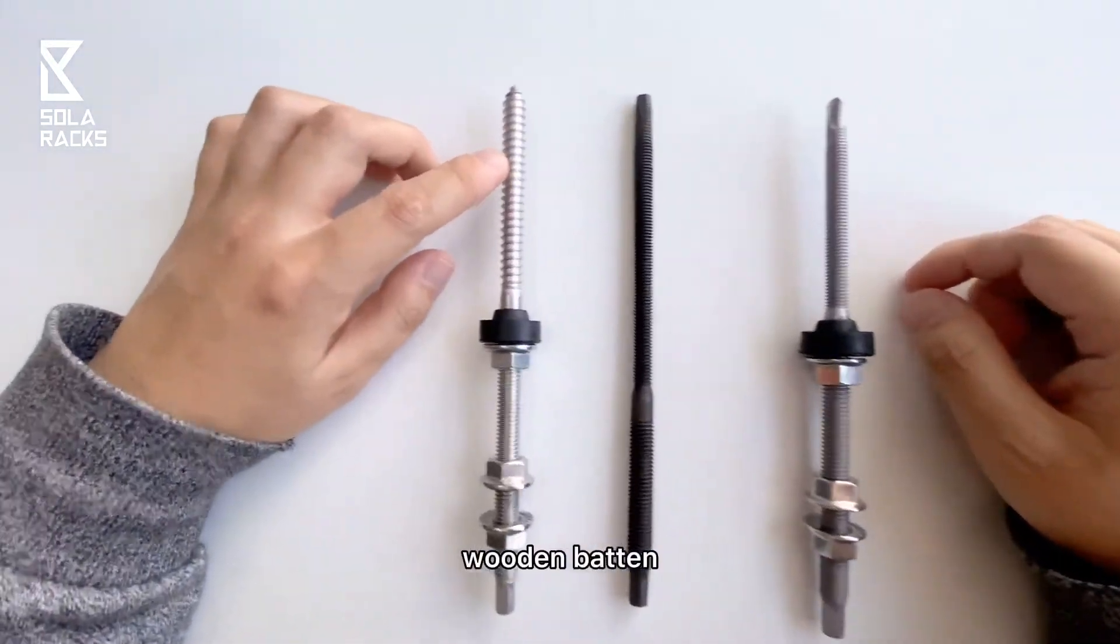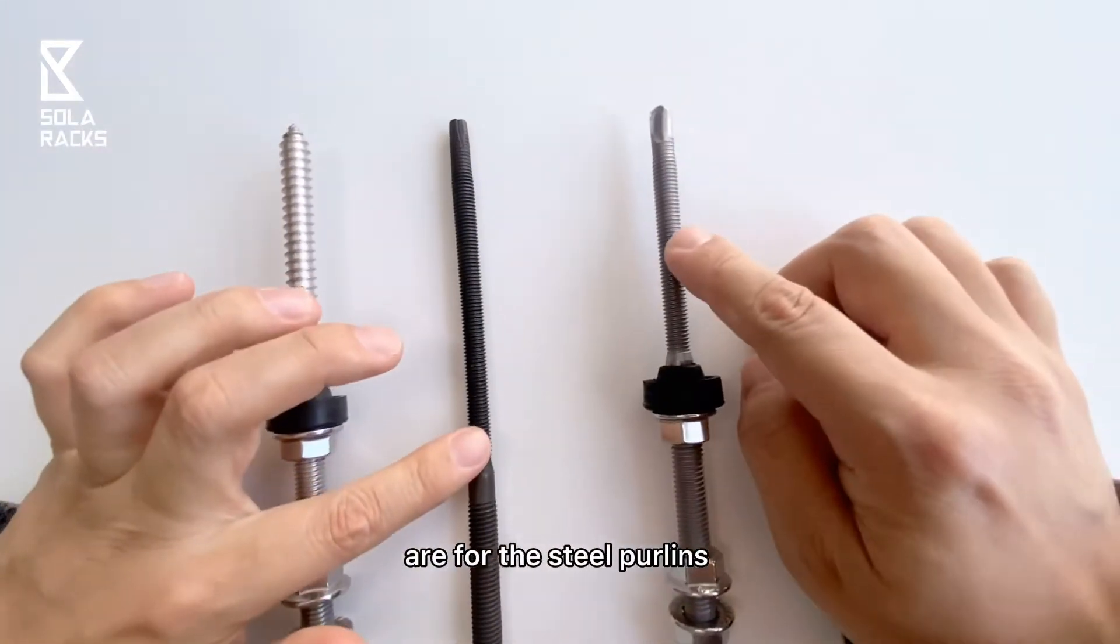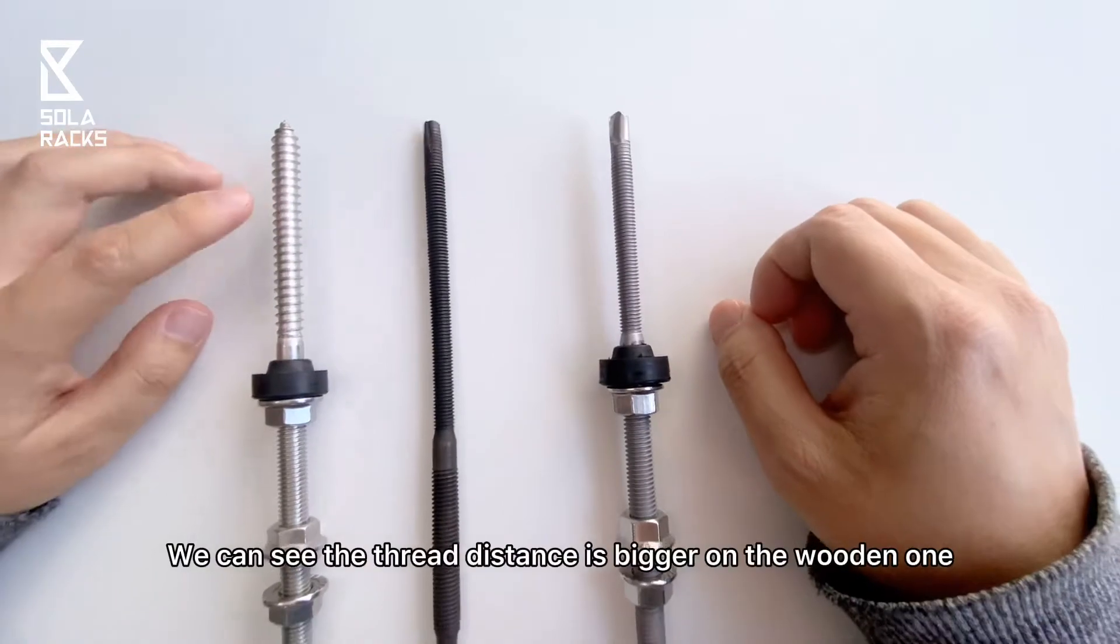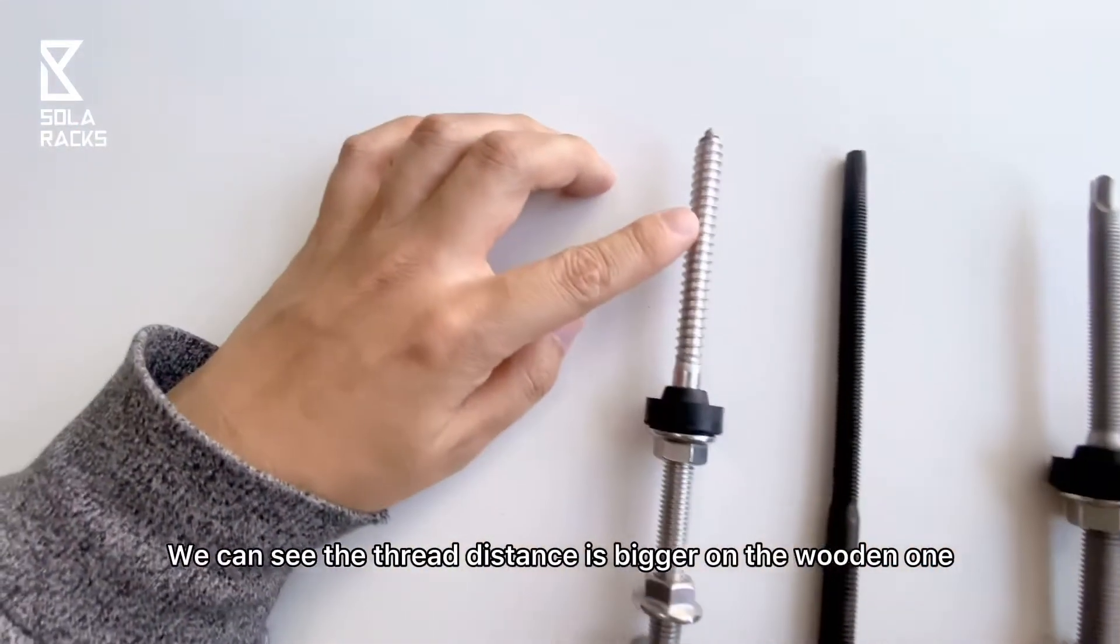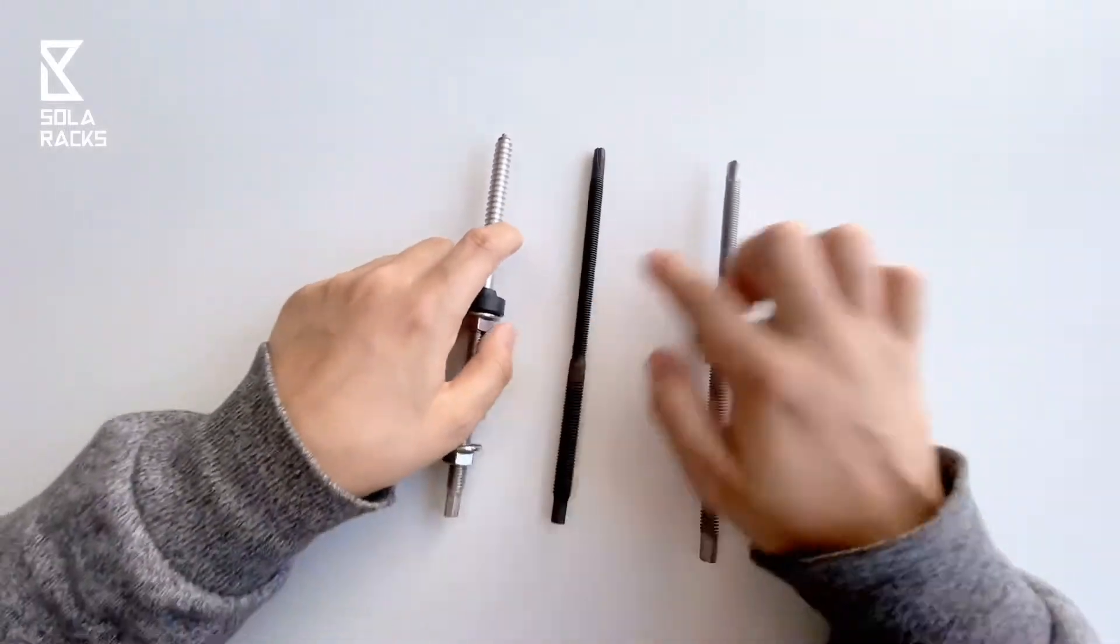So this one is for the wooden batten, and these two are for the steel purlins. We can see the thread distance is bigger on the wooden one. These two are for the steel.